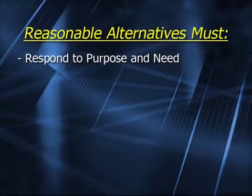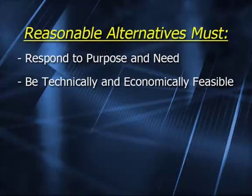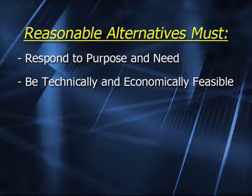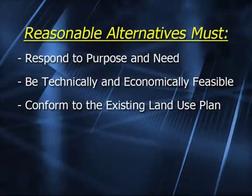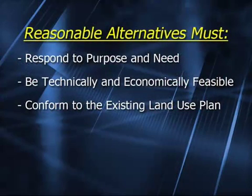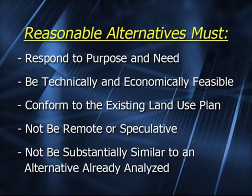As we said before, the purpose and need is very important in helping define the range of alternatives. To be reasonable, an alternative has to respond to the purpose and need. It has to be technically and economically feasible. It needs to be consistent with the basic policy objectives for management of the area — normally we interpret this to mean it's in conformance with the land use plan. Its implementation must not be remote or speculative, and it must not be substantially similar in design and effects to an alternative that is already analyzed.